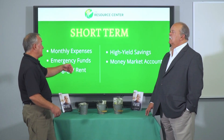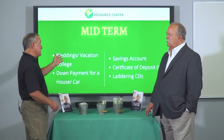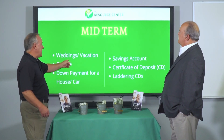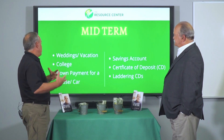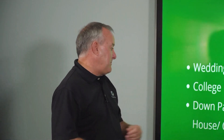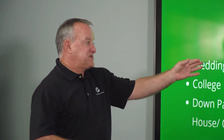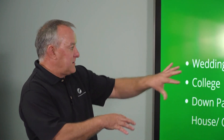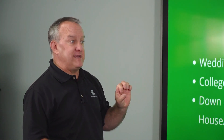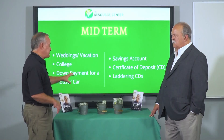When you're looking at the medium range bucket, that's money you're maybe saving for a wedding, maybe a vacation, college for your kids coming up down the road, down payment for a house or a car — savings account, certificate of deposit, laddering your CDs — that type of environment where you're using cash type accounts that you can readily get to if you need them. That's your medium range bucket.